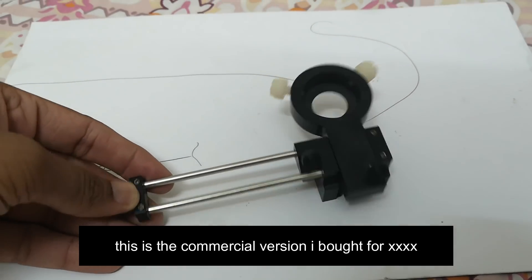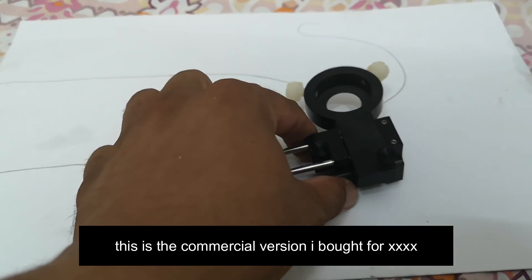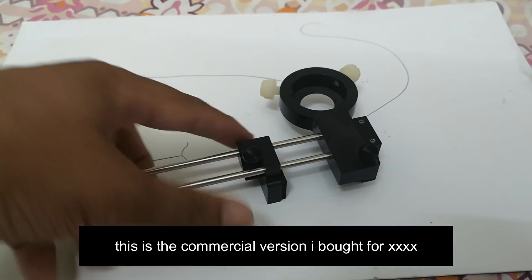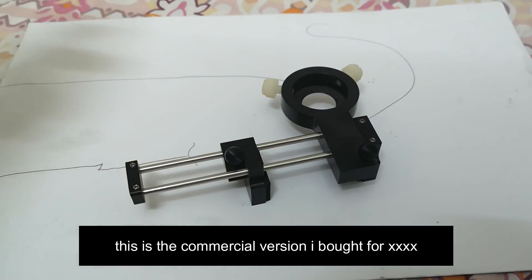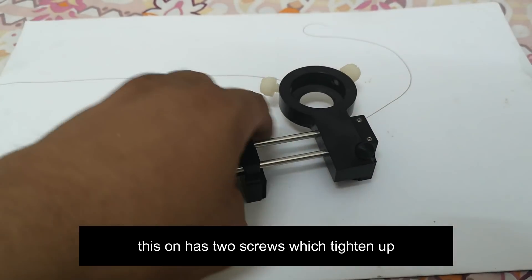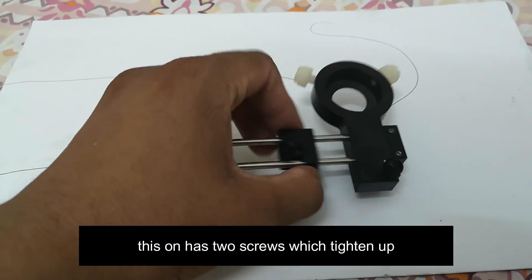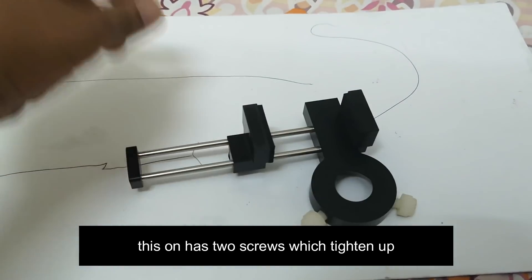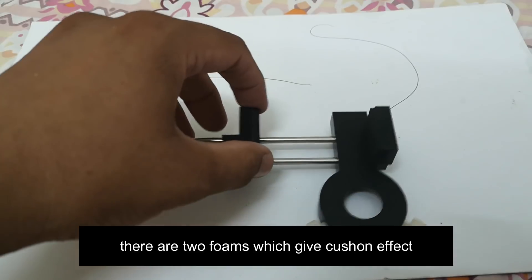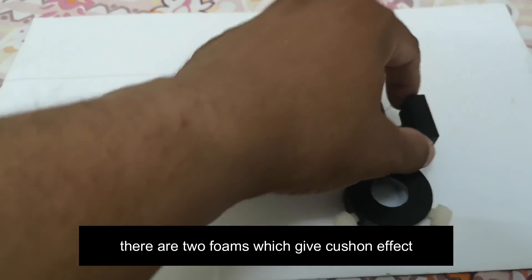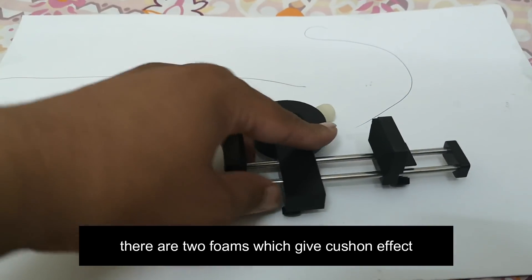This is the commercial version which I bought for about 100 pounds from internet and got it delivered to me. This has two screws which tighten up and there are two foams attached to the ends which give a cushion effect to the phone.